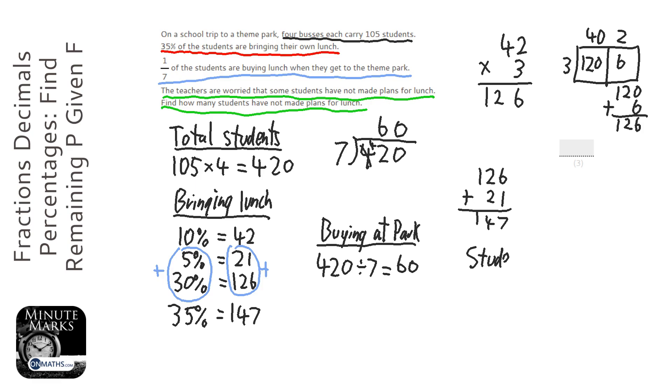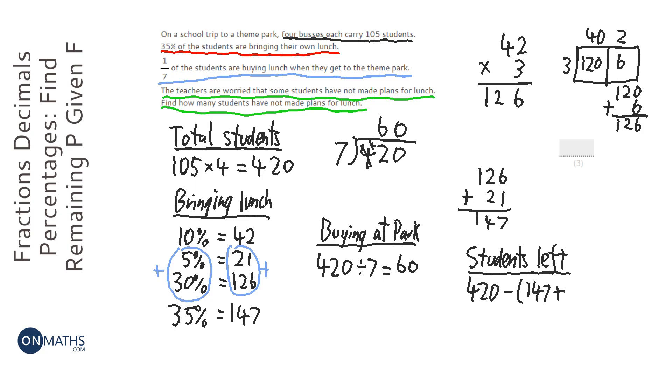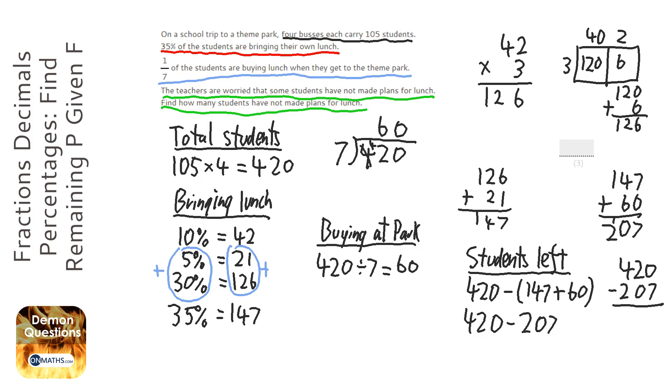So students left. We're going to do the amount of students, which is 420, take away the people who are bringing lunch plus the people who are buying it in the park. So we need to work out what that is, so it's 147 plus 60. So 7 plus 0 is 7, that's going to be 10, and so that's going to be 207. And finally we need to work that out, so 420 take away 207. So you can't do 0 take away 7, so we nick 1 there. 10 take away 7 is 3, we need to nick 1 there as well, so 11 take away 0, oh no, I don't need to nick 1 there, do I? So we've just got 1, so that's 1, 4 take away 2 is 2. So the answer is 213.